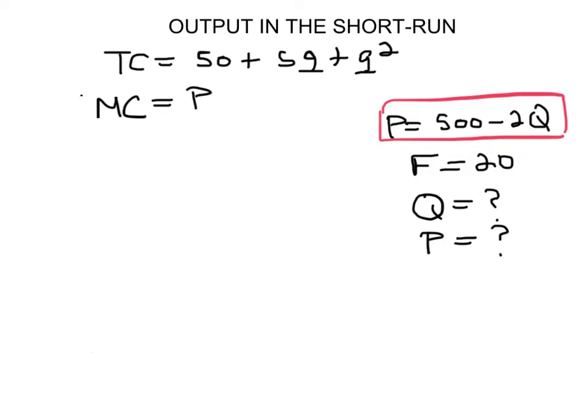So probably the first thing you need to do is to find the marginal cost for this equation, and that's going to be the derivative for the total cost equation. So you will have MC = 5 plus 2q.